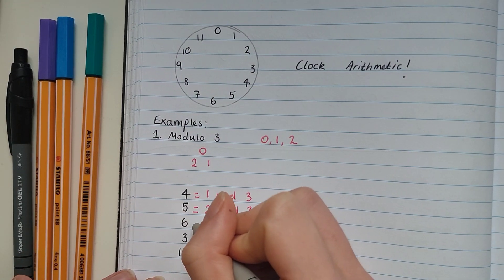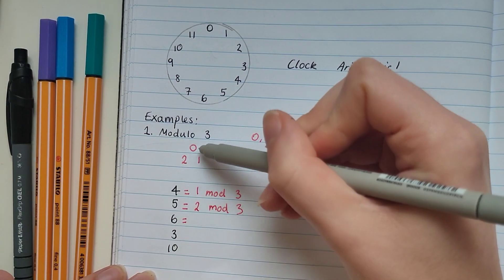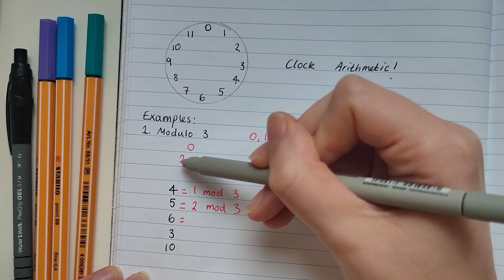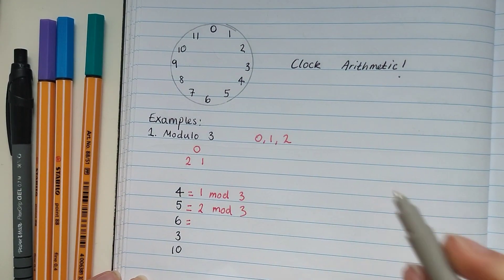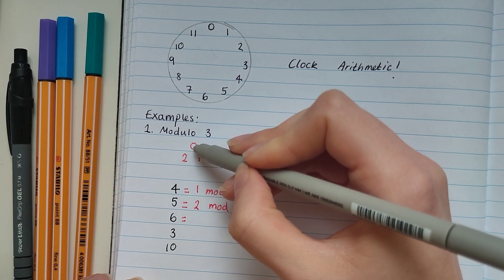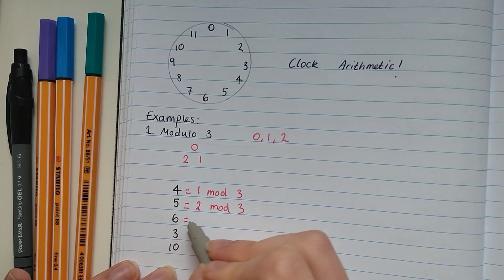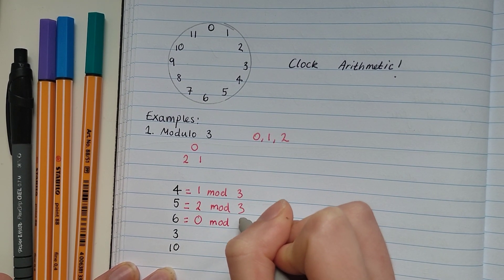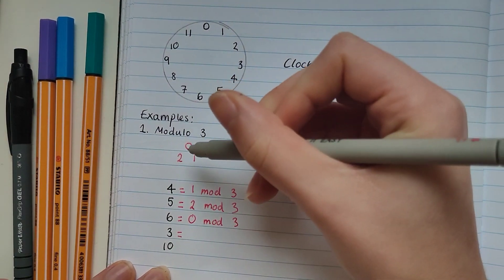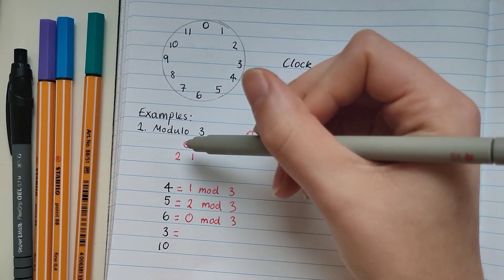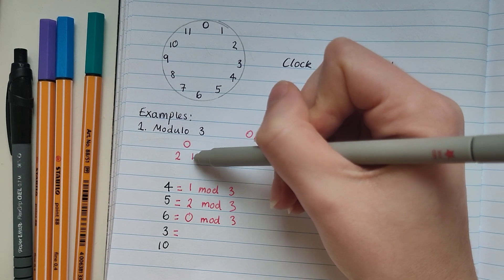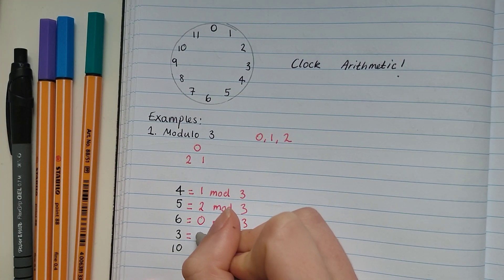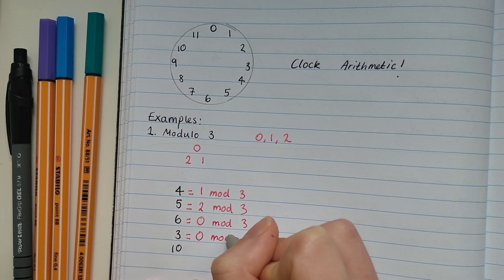Now let's try an example with 6. Using our clock: 0, 1, 2, 3, 4, 5, 6 — when we count to 6, we get all the way back around again to 0. So 6 is equal to 0 mod 3. What about 3? What is 3 modulo 3? Using our clock: 0, 1, 2, 3 — we got back to 0. So 3 is also equal to 0 mod 3.